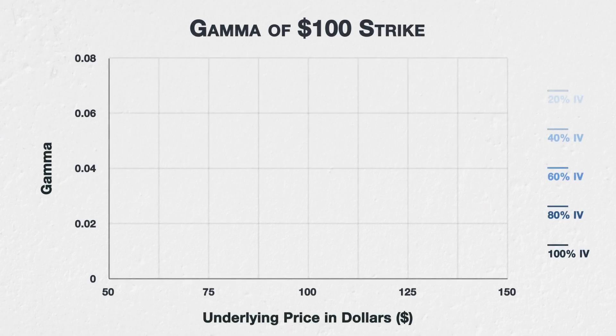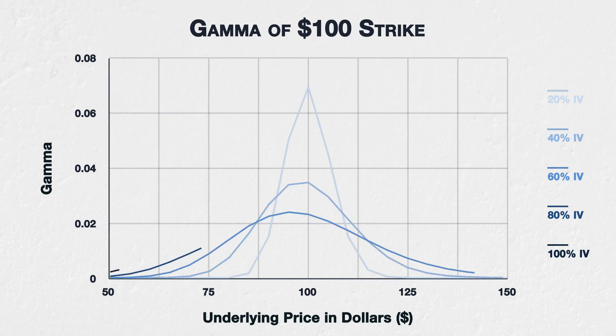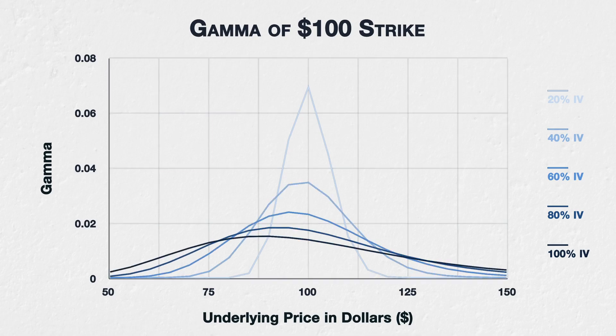Implied volatility will also affect the gamma of options. Let's take a look at the $100 strike from the previous lecture again, but this time see how different levels of implied volatility affect the gamma.